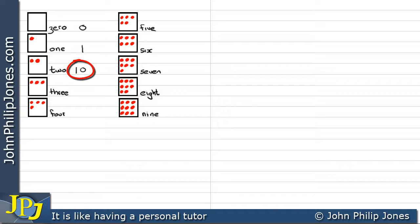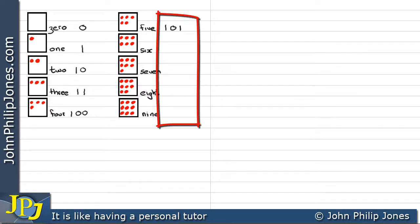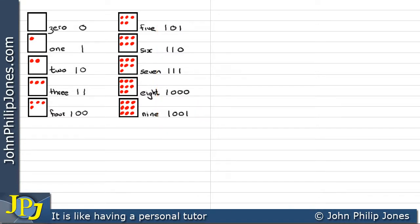In binary, to represent zero things in a box we use zero, and to represent one thing in a box we use one. Now we've got a problem — we've just run out of symbols. In the same way that when we got to nine with the denary number system we ran out of symbols and started to reuse them, we have the same issue here. Two becomes one zero in binary, three becomes one one in binary. We've now run out of symbols for the first column, so we put two zeros and a one, and we can continue. All of these numbers I'm writing out are the binary representations of the number of dots in each particular box.